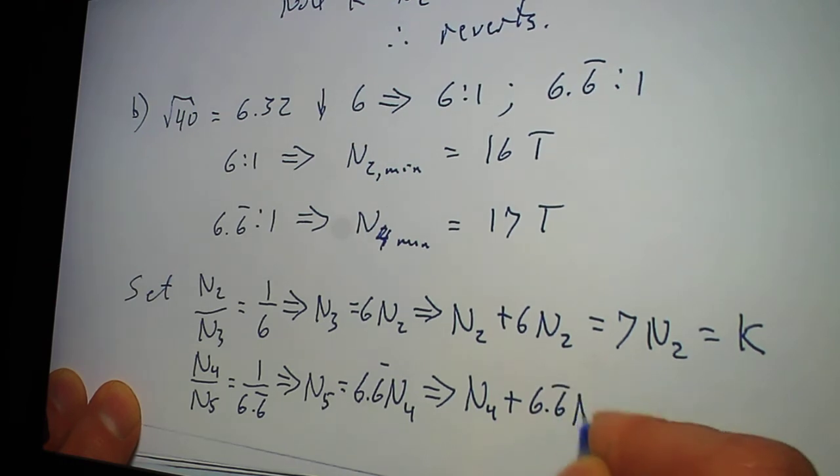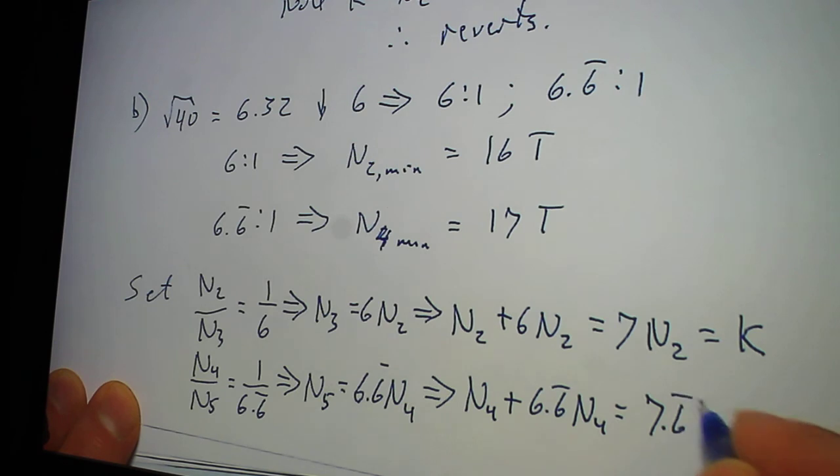which means that N4 plus 6.6N4 equals 7.6N4 equals K.